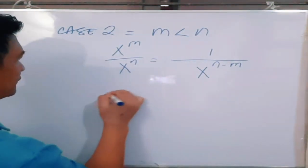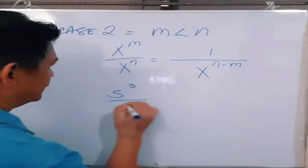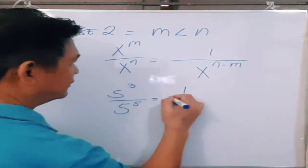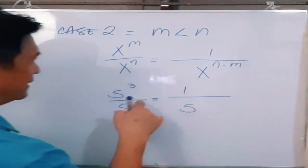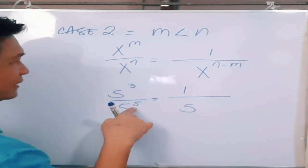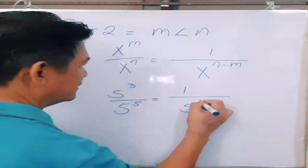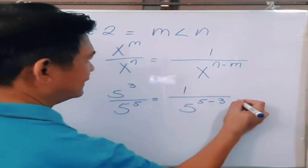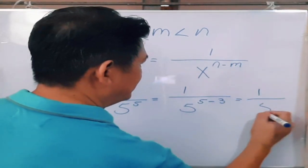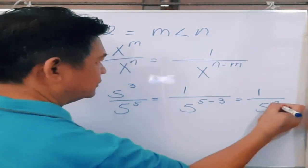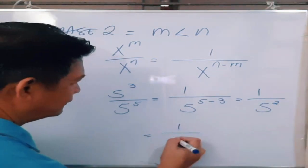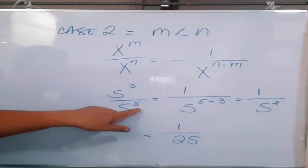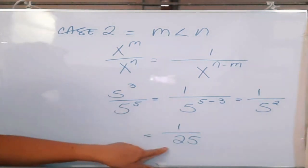For example, if you have 5 raised to the third power over 5 raised to the fifth power, that would be 1 over 5 raised to 5 minus 3. What is 5 minus 3? It is 2. That is now equal to 1 over 5 squared, which is 1 over 25. So 5 cubed over 5 raised to the fifth power is equal to 1 over 25.